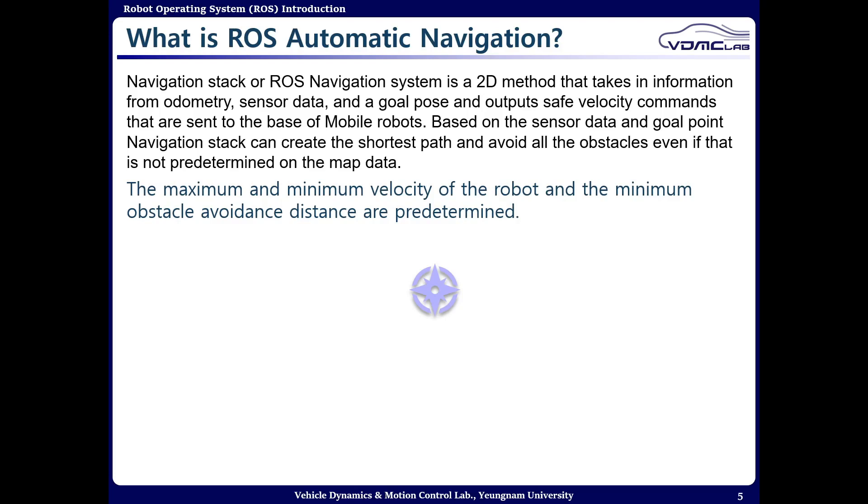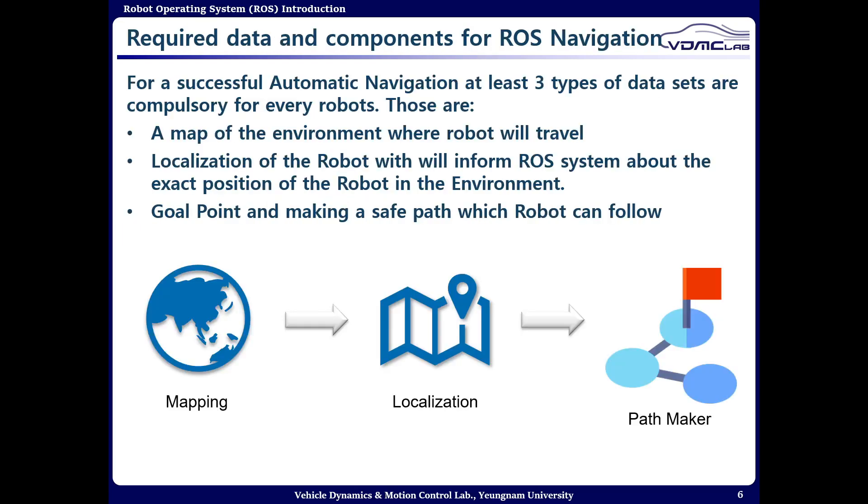With that the robot will travel to the path. In this automatic navigation, maximum and minimum velocity of the robot are set and you can also control all of those. So what do you actually need to command a successful automatic navigation?